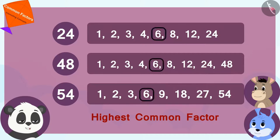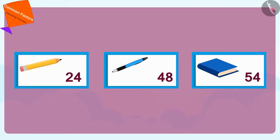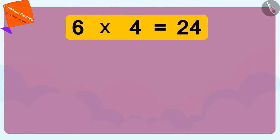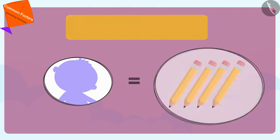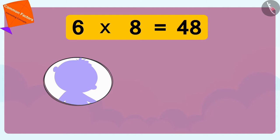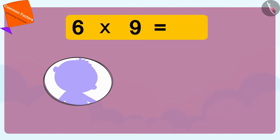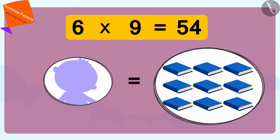Therefore, we can distribute these things equally among 6 children. Children, can you tell how many pencils, pens, and notebooks each child will get? You can stop the video and find the answer. 6 times 4 is 24, so every child gets 4 pencils. 6 times 8 is 48, so each child gets 8 pens. And 6 times 9 is 54, so every child will get 9 notebooks.